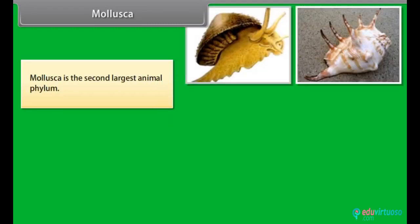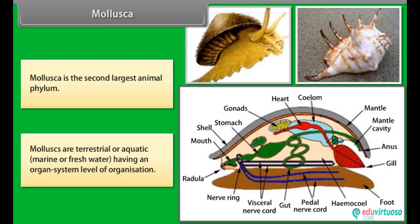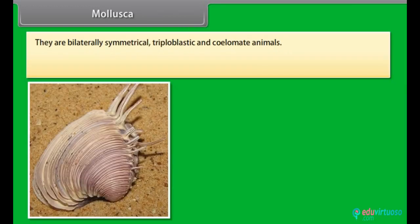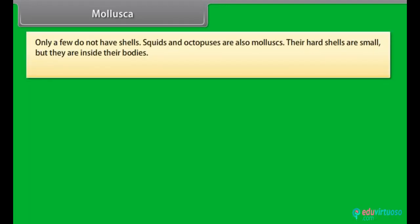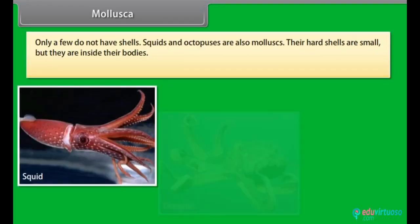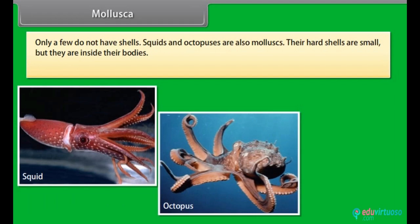Mollusca is the second largest animal phylum. Molluscs are terrestrial or aquatic — marine or freshwater — having an organ system level of organization. They are bilaterally symmetrical, triploblastic and coelomate animals. The body is covered by a calcareous shell and is unsegmented with a distinct head, muscular foot and visceral hump. A clam has two shells joined together by a hinge. Only a few do not have shells; squids and octopuses are also molluscs with hard shells inside their bodies.